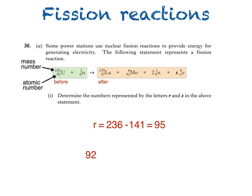After the reaction, the total of the atomic numbers is 57 for lanthanum, plus 42 for molybdenum, plus S times negative 1.